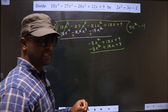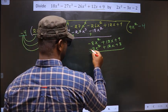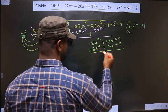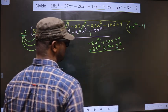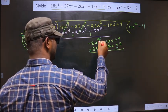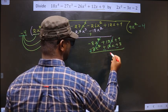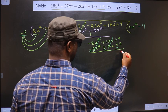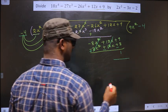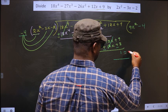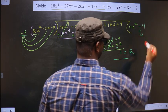Now change the signs again: minus becomes plus, plus becomes minus. The minus 8x² terms cancel out, plus 12x and minus 12x cancel out, and plus 9 minus 8 equals 1. So the remainder is 1 and the quotient is 9x² minus 4.